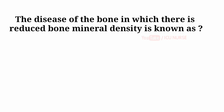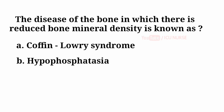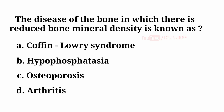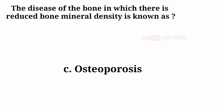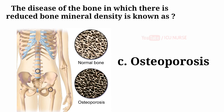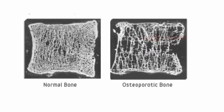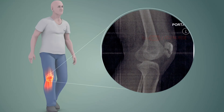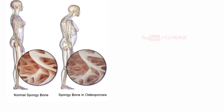The disease of the bone in which there is reduced bone mineral density is known as: A. Coffin-Lowry syndrome, B. Hypophosphatasia, C. Osteoporosis, D. Arthritis. And the answer is C. Osteoporosis. Low bone mass and deterioration of bone tissue is seen in osteoporosis, which will increase the risk of fracture. Osteoporosis develops over a number of years without showing any symptoms. Hence, it is known as a silent thief.